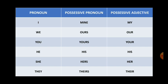To understand better, let us look at this table. For different pronouns, different possessive pronoun and possessive adjective forms exist. For the pronoun 'I,' the possessive pronoun is 'mine' and the possessive adjective is 'my.' We can use it like this: 'These shoes are mine' or 'These are my shoes.' For the pronoun 'we,' we have the possessive pronoun 'ours' and the possessive adjective 'our.'